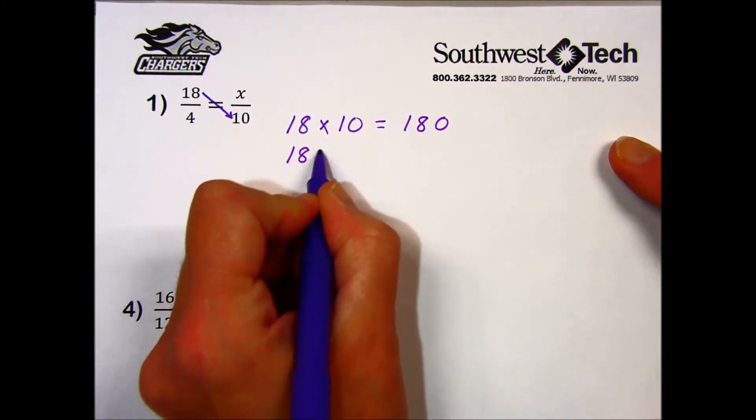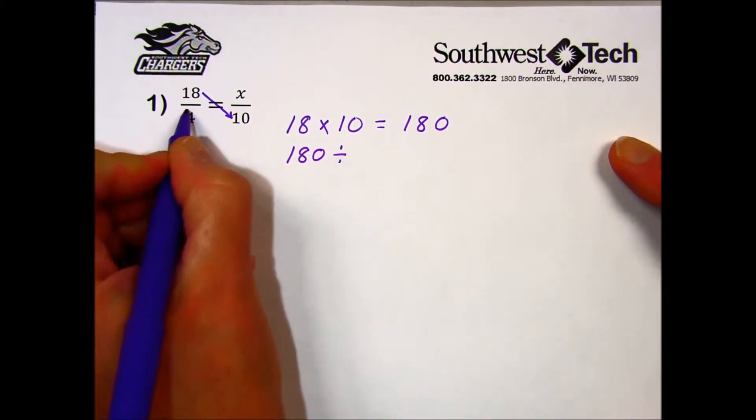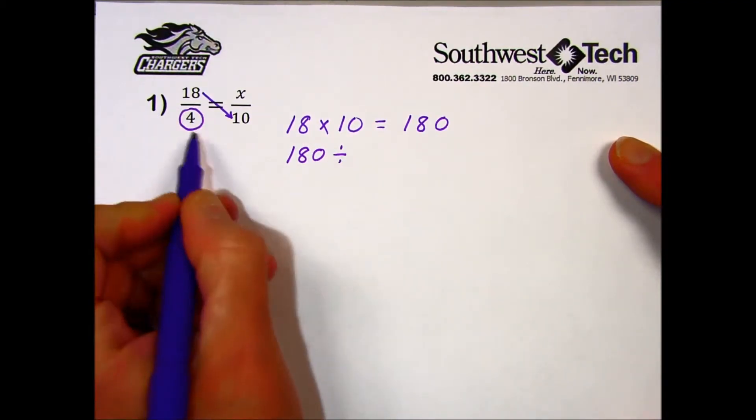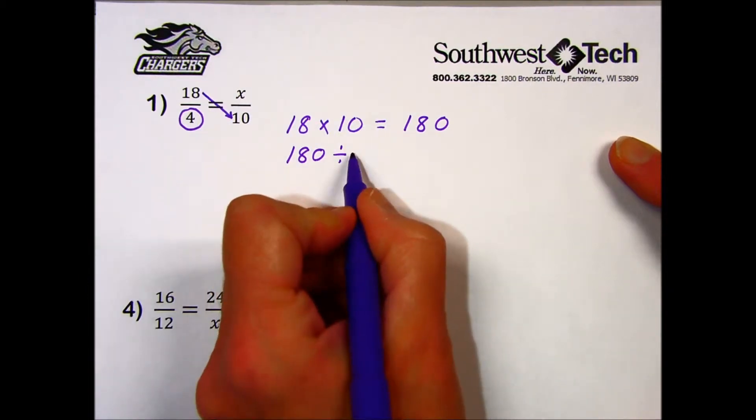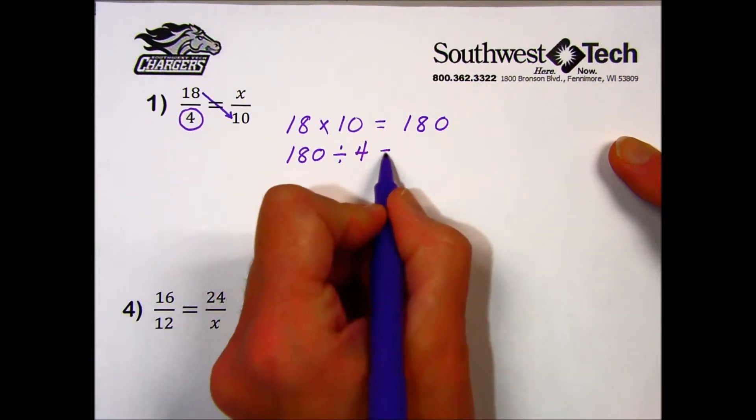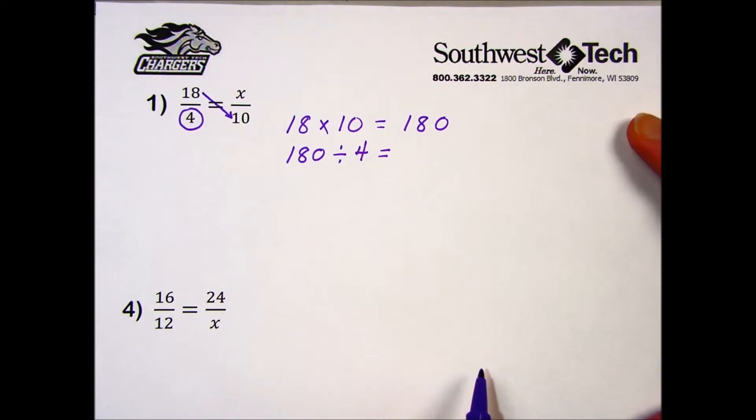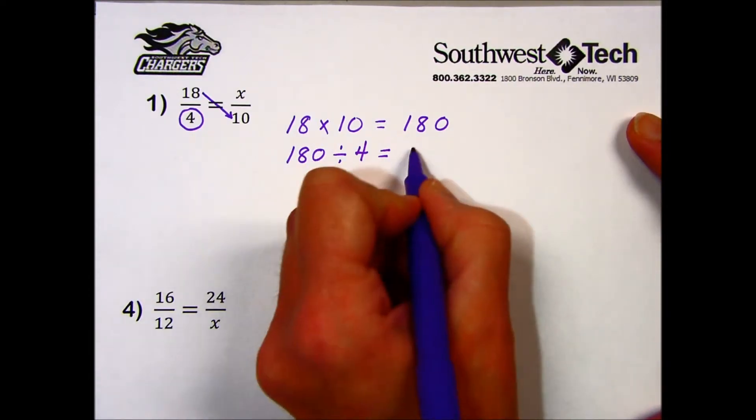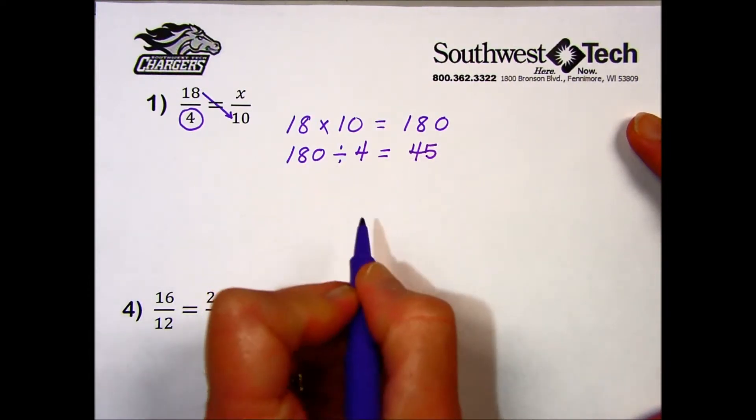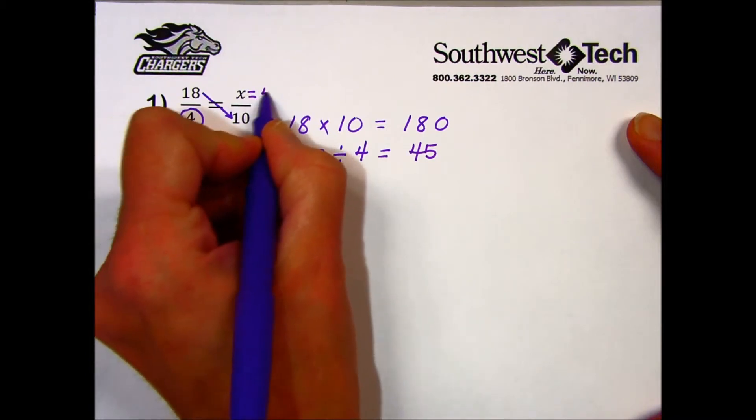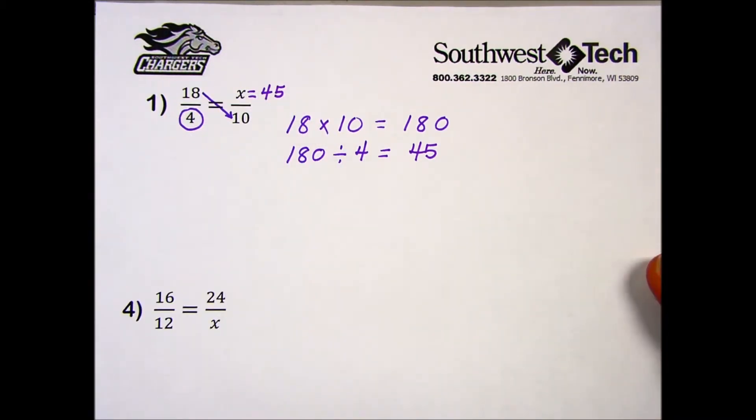We then take that result and divide it by the number we didn't use in the other diagonal, opposite the variable. 180 divided by 4 results in 45, which is the missing value in our proportion.